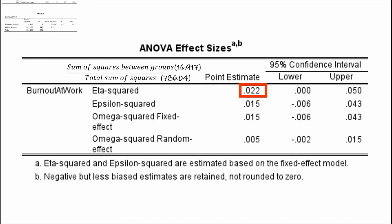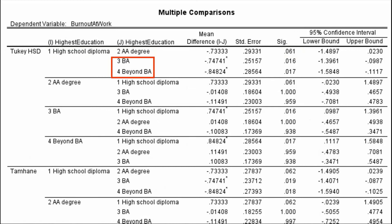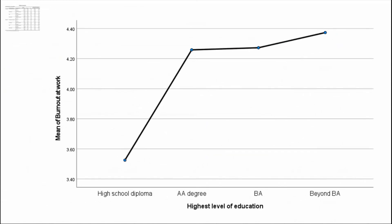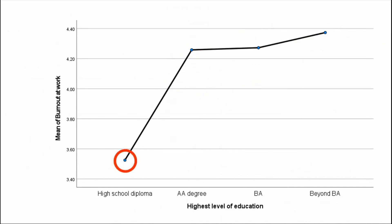Let's look at the Multiple Comparisons table. Here we see that there are no differences in burnout between those with a high school diploma and those with an AA degree, as the p-value is greater than 0.05. But the differences are statistically significant when comparing those with high school diploma to those with a bachelor's degree and those with a graduate degree, with p-values below 0.05. The Means Plot shows this visually — burnout scores are quite similar and relatively high among those with AA degree, bachelor's degree, and graduate degree, but burnout is lower for those with a high school diploma.